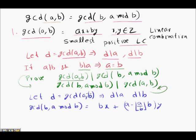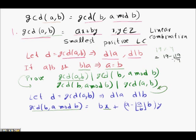Let D be the GCD of A and B, so D divides A and D divides B. We represent GCD(B, A modulo B) as a linear combination. Note that A modulo B can be written as A minus floor(A/B) times B. For example, 19 modulo 4 equals 19 minus floor(19/4) times 4, which is 19 minus 16 equals 3.